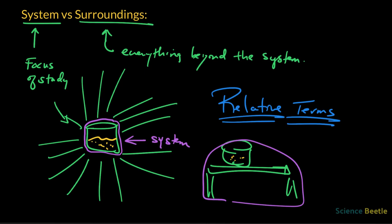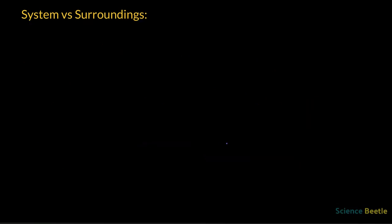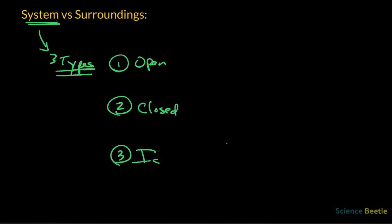What I want to talk to you about now is what kinds of systems are there. In the discussion of systems here, we want to make sure that we understand that there are three types. The three types are as follows: you're either going to have an open system, you're going to have a closed system, or you're going to have an isolated system.